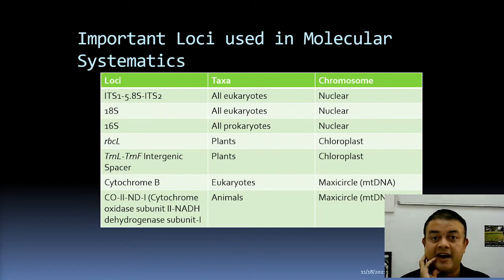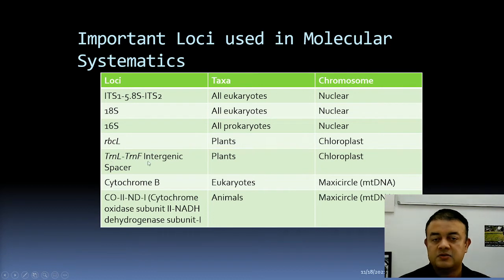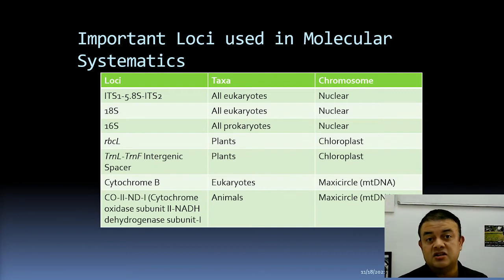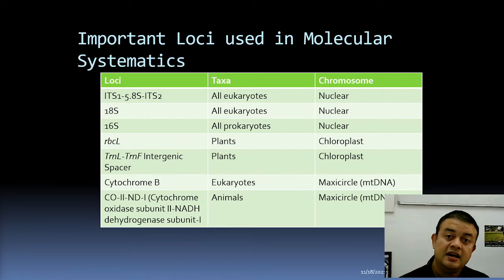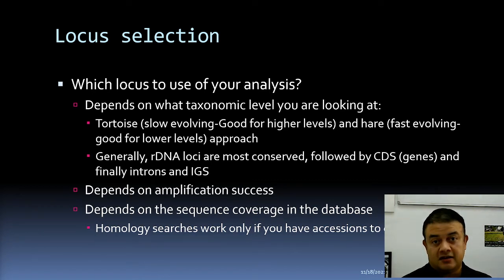So how do you actually choose? For example, if I want to work on Ocimum — the holy basil, tulsi — should I use trnL–F spacer because it's a plant, or ITS because it works for eukaryotes? Is the choice random, or is there a rationale for choosing one locus over another? The choice depends on many factors, the first being the taxonomic level you are investigating.